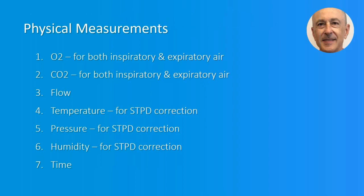Metabolic carts make quite a few physical measurements: oxygen concentration for both inspiratory and expiratory air; carbon dioxide concentration for both inspiratory and expiratory air; flow, where flow and time are used to derive breath volume and determine the start and end of a breath; temperature, pressure, and humidity used for STPD correction — noting that some metabolic carts require the operator to provide those devices; and time measurements used to derive breath volume and synchronize the breath with flow.